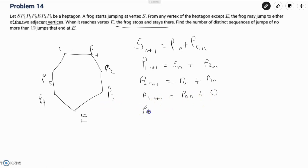For P4(n+1), we have that it's equal to - we would normally say E(n), but it stops at E, so it's not going to move after that. So that would just be zero plus P5(n). And P5(n+1) = P4(n) + S(n).